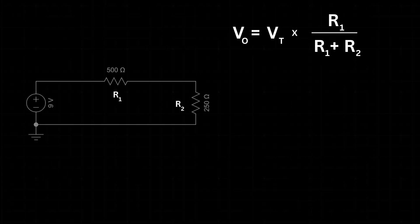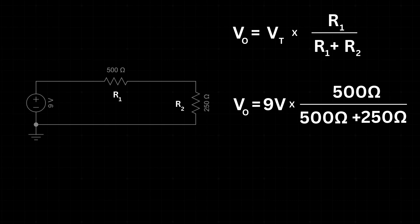Let's apply the voltage divider formula to confirm our calculation. When we plug in the numbers, replace R1 with 500 ohms and R2 with 250 ohms. The result is the same output voltage of 6 volts. If we check the output voltage going across R2, we find it equals 3 volts.